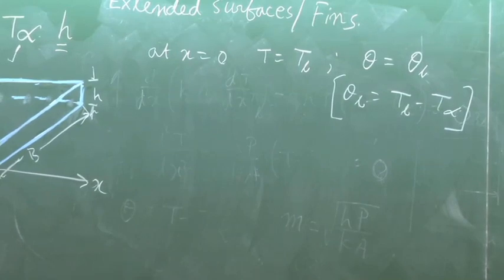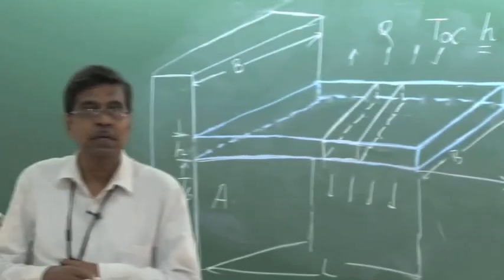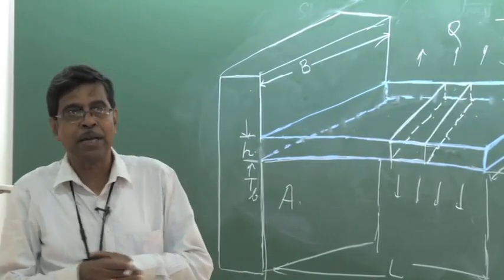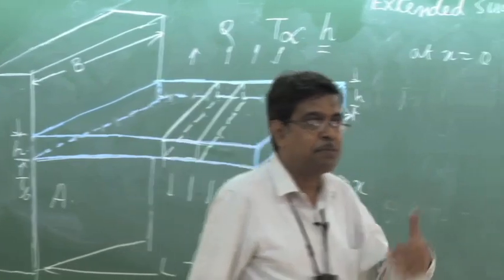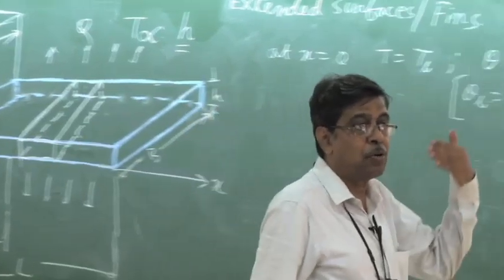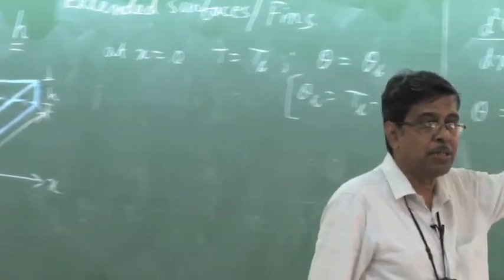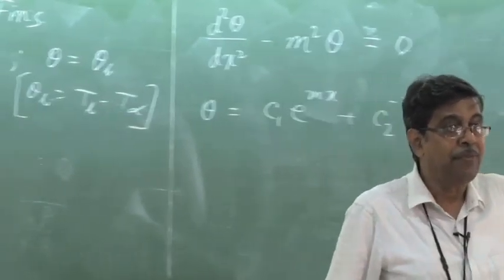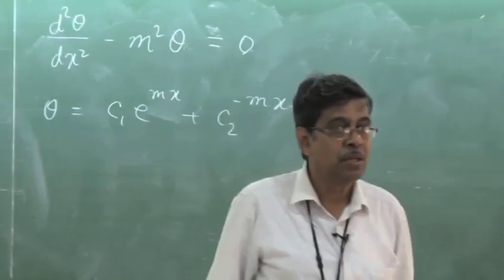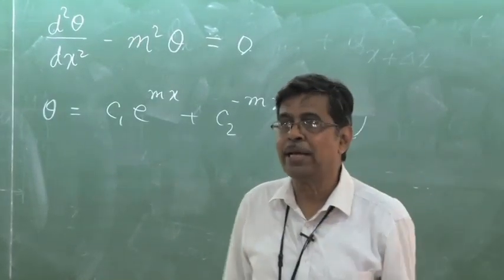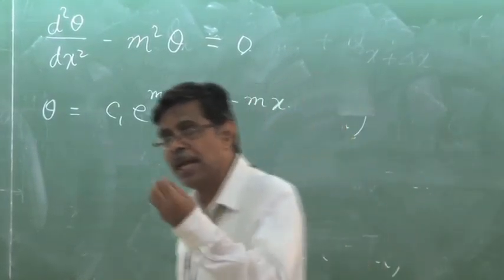What is another boundary condition? For another boundary condition you have to search with respect to x — we have to find out what is the boundary condition at x equal to L, if L is the length of the fin. So you have to know whether it is insulated or something else.